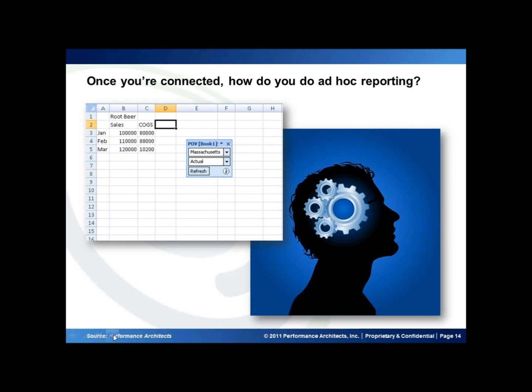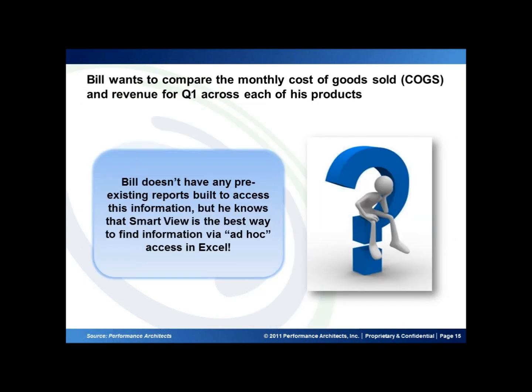How do we create an ad hoc retrieval to start reporting on our data? Let's take a look at our business case using our favorite company, the Boston Beverage Company. Bill, our senior financial analyst, wants to compare the monthly cost of goods and revenue for Q1 across each of his products. Unfortunately, he doesn't have any pre-existing reports to view the data. He could go into a tool like the Oracle General Ledger and pull each column down, or he could call up a few reps to get their numbers. But Bill knows that the most efficient and accurate way to discover this data is by using the ad hoc capabilities of SmartView in Excel. Let's take a look at how he does this.